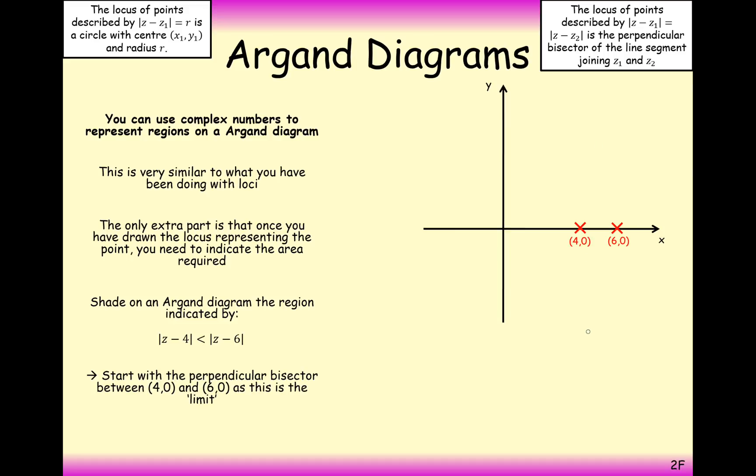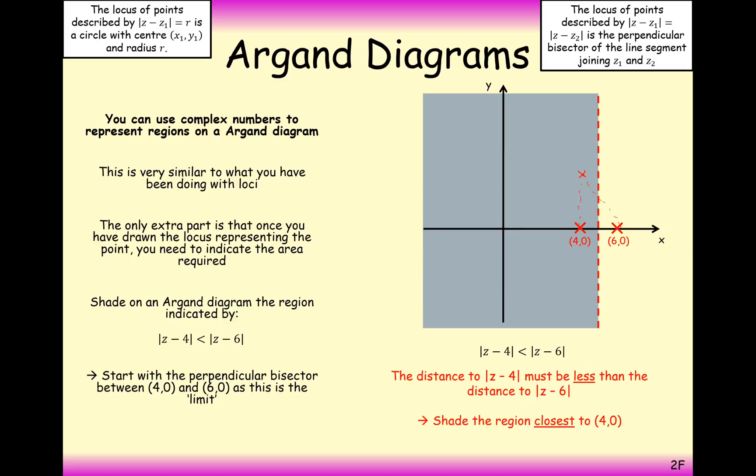And what we want is for the distance away from the coordinate 4 to be less than the distance away from the coordinate 6. Or in other words, the distance away from the coordinate 6 is going to be bigger than the distance of a coordinate away from 4. Let's take this coordinate up here. The distance away from 4 is less than the distance away from 6, or 6 is further away from this coordinate than the point. So this coordinate is inside the region that we're looking for here. It's the left-hand side that we're going to be shading in here.